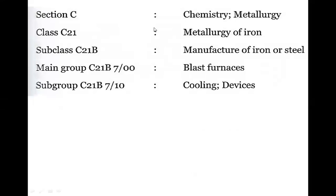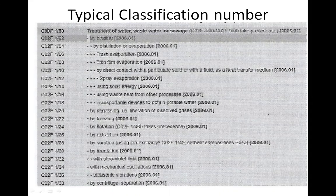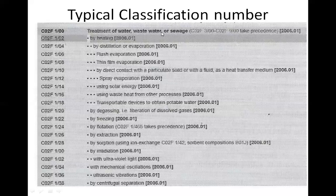This is a typical example for classification. Looking at section C — chemistry/metallurgy — the class is the main group. The main group covers the treatment of water, waste water, and sewage. The subgroups are 1, 2, 4, 6, 8 — covering treatment of water/waste/sewage by heating, distillation, flash evaporation, and thin film evaporation.